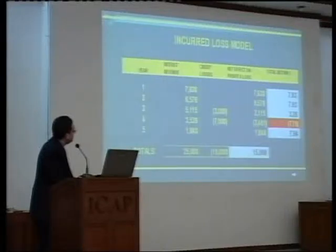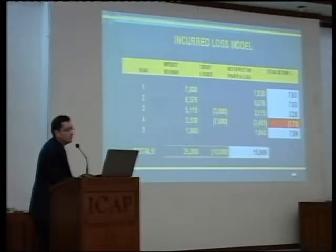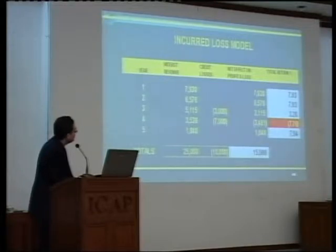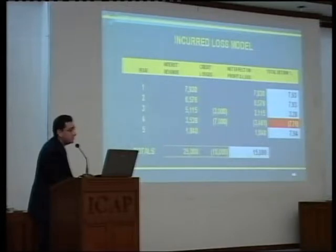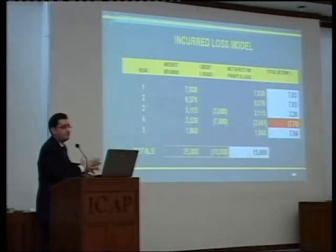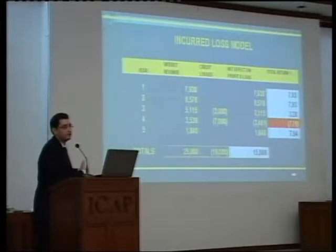Because it will hit the P&L account, your net income will be 3.2%, not 7.93% of the outstanding balance. And in the fourth year, when the credit loss is 7,000, it may go to negative as well. So this is an abrupt pattern of income on a loan under the incurred loss model as we are using today.